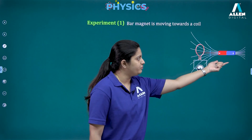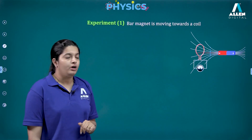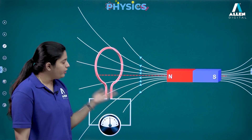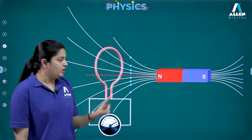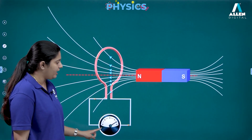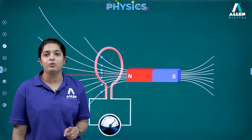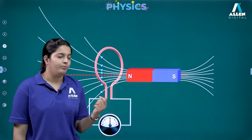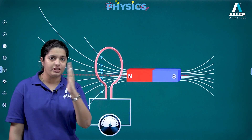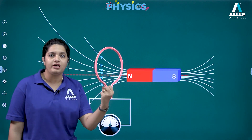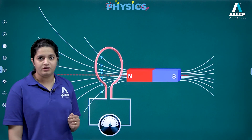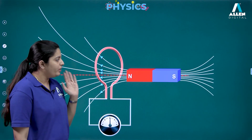What he did was he kept a bar magnet in front of the coil and started moving it towards and away from the coil. What was seen was that there is some kind of deflection shown in the galvanometer, indicating flow of current. The galvanometer's function is to show deflection when current passes through it — more current means more deflection.